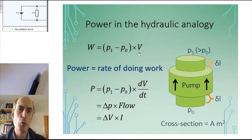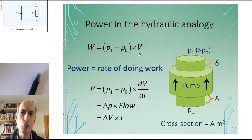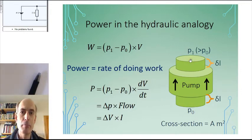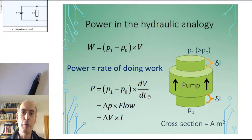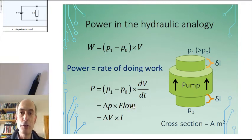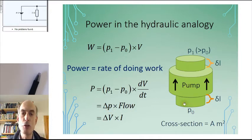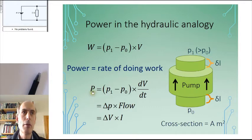Power is the rate of doing work — the amount of work done in unit time. dV/dt, the rate at which volume is going through, is by definition the flow rate: the volume of fluid that goes through in a unit time. In the hydraulic analogy, I can represent the flow rate as the current, and the difference in pressures on both sides of the pump as the voltage difference. So that gives us this fundamental formula: power is the change in voltage multiplied by the current.